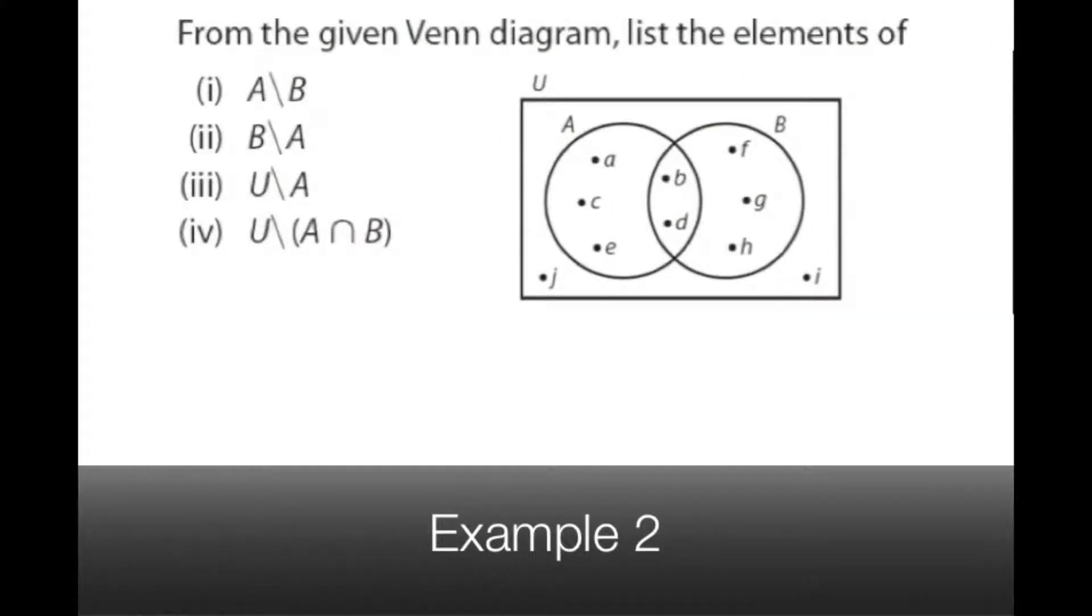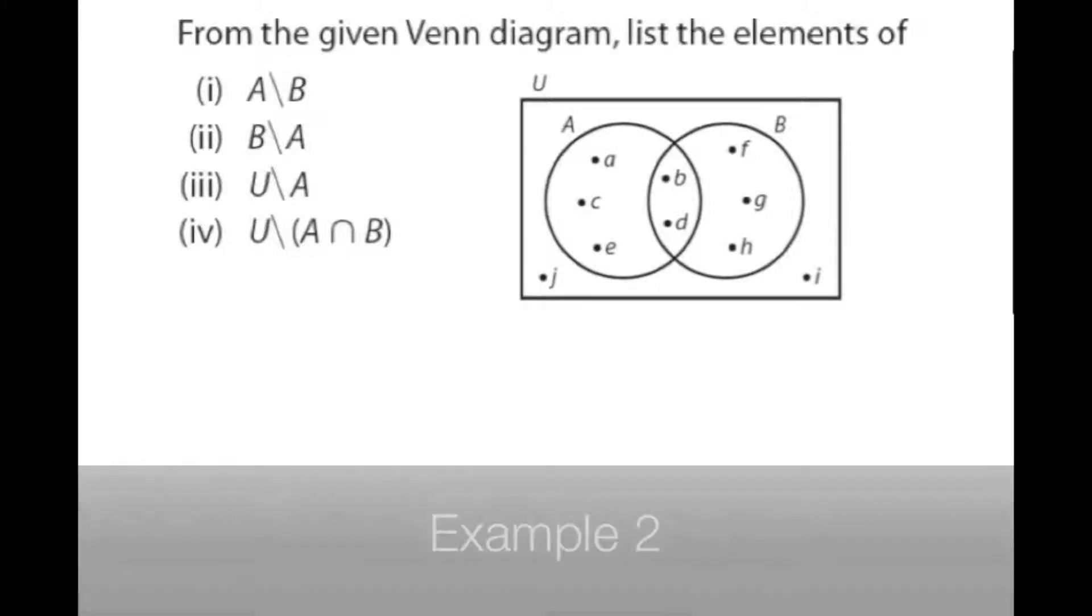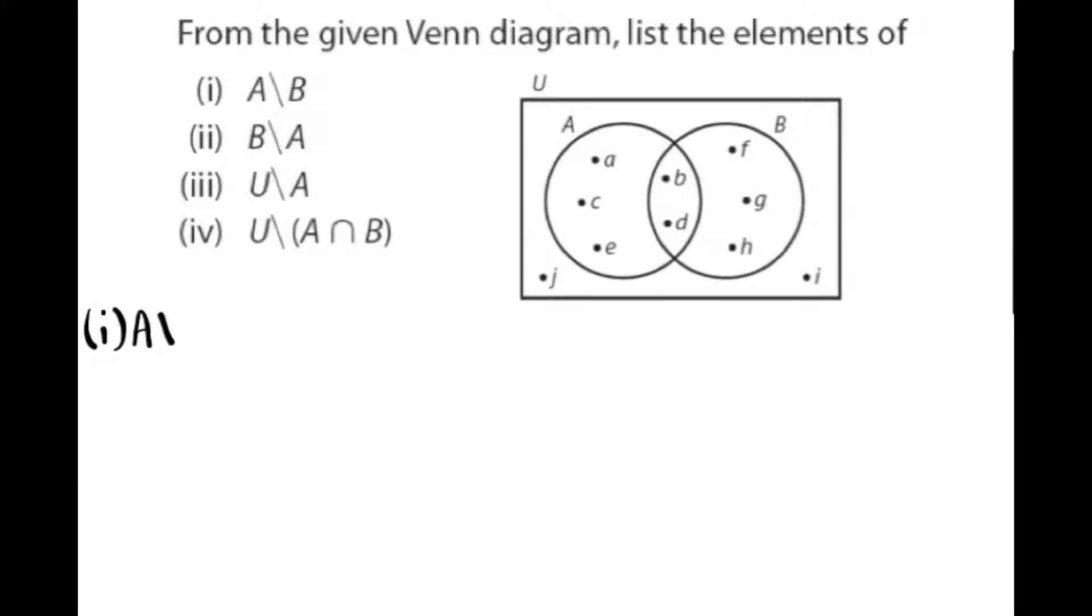Okay, a second example. Firstly from the Venn diagram we're to find A less B. So what's A not B or A less B? These are the things in A that aren't in B. So I'm going to shade this part in yellow. These are the A parts not in B. So that would be elements a, c, and e.